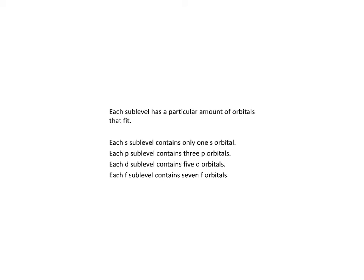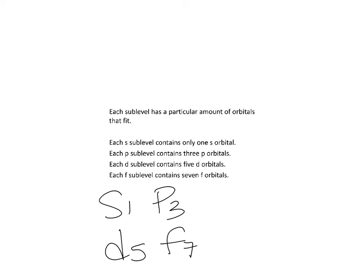The key thing to remember is: S has 1 orbital, P has 3, D has 5, and F has 7. Those are how many orbitals are in each sublevel. So: S=1, P=3, D=5, F=7.